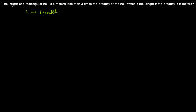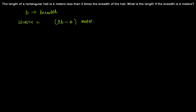The condition given is: the length is 4 meters less than three times the breadth. So three times the breadth is 3b, and the length is 4 meters less than this. So 3b minus 4 meters will be the length of the hall.